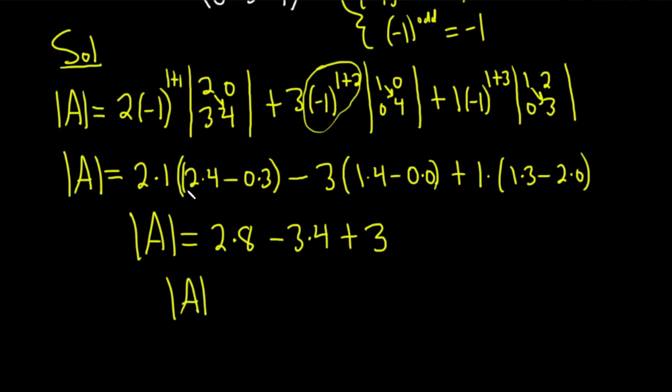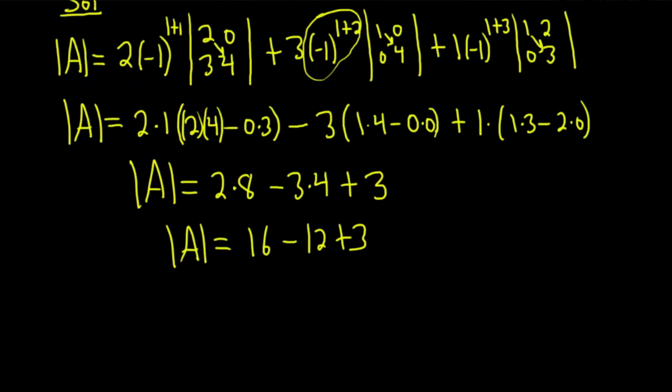I guess I could have put them in parentheses like this, but then you have a gazillion parentheses. 2 times 8 is 16 minus 12 plus 3. So this is going to be the determinant of A is equal to 4 plus 3. So therefore, the determinant of A is the number 7.